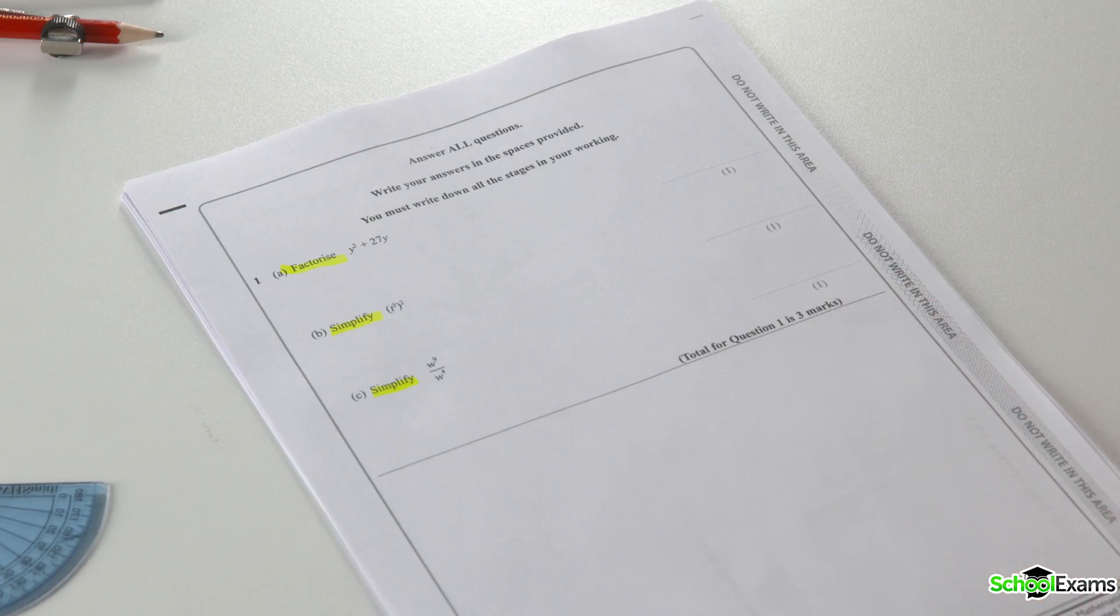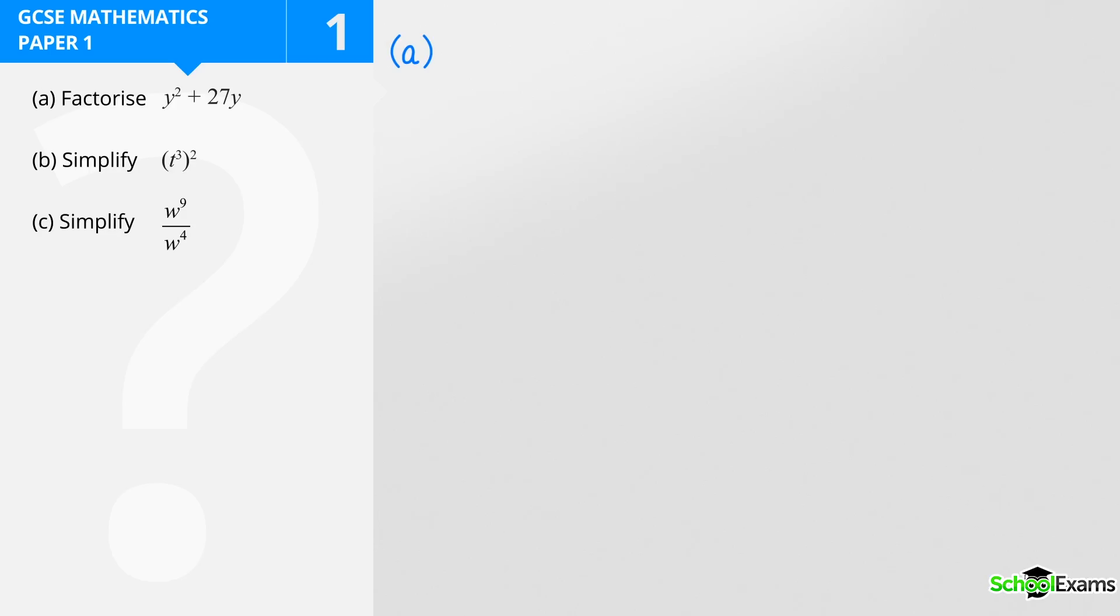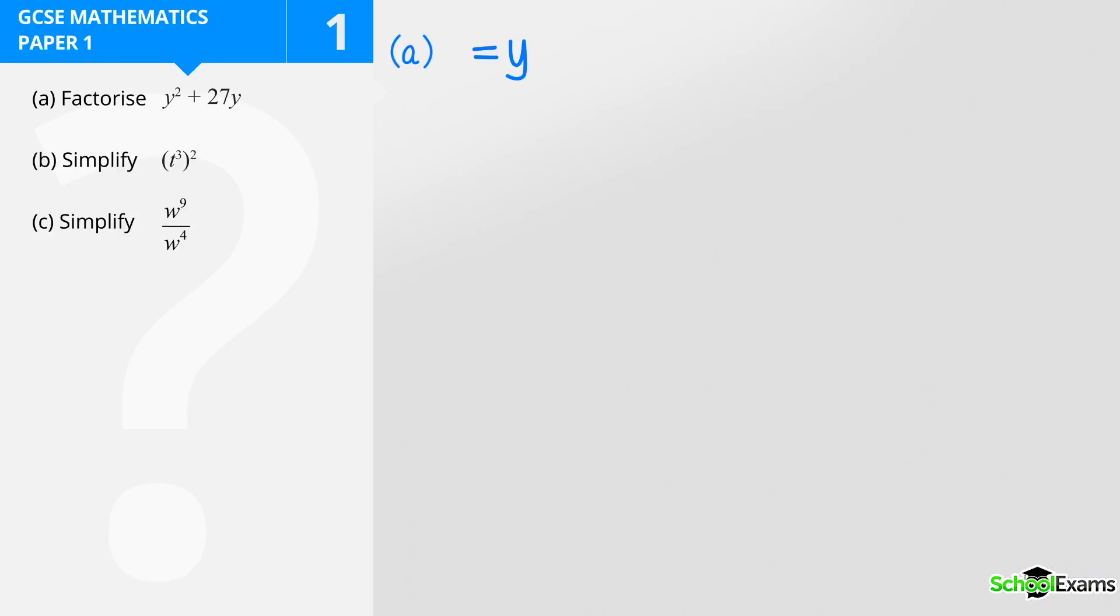Number one part A, factorise y² + 27y. I look at this and I have to ask myself the question, is it one bracket or two brackets? We have two terms here and it's going to be one bracket, so I'm going to take out a common factor. They both contain the common factor of y, so the y comes outside the bracket. There's no common number, so inside the bracket I'm going to have to have y because y multiplied by y is y², plus 27 because y multiplied by 27 is 27y. One mark for that answer.